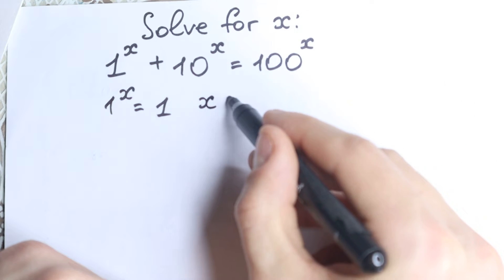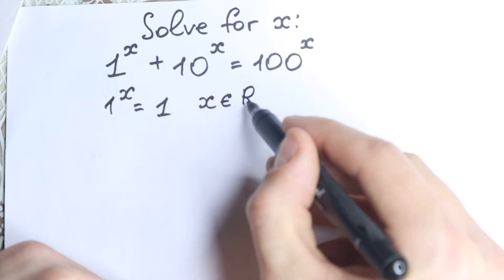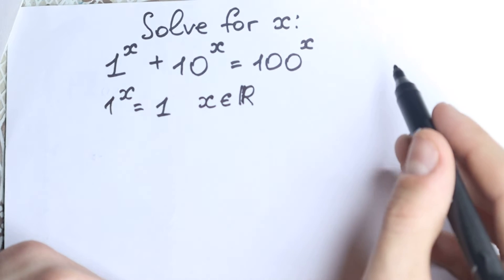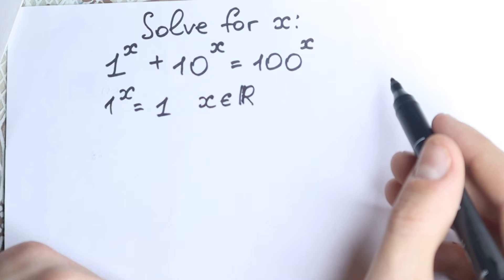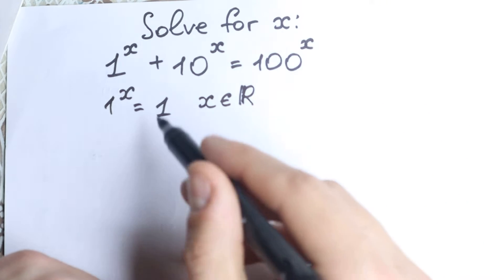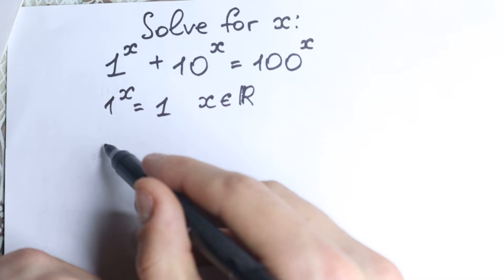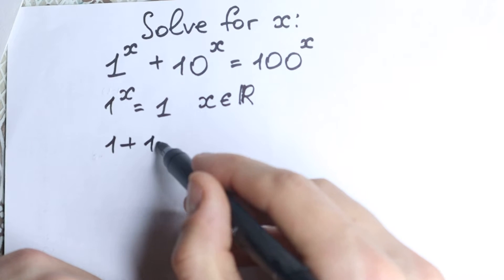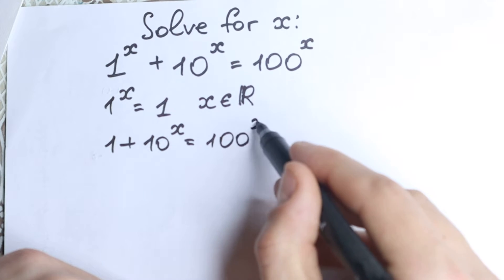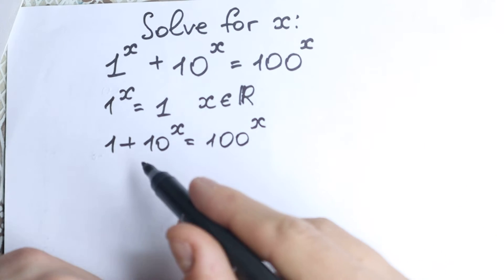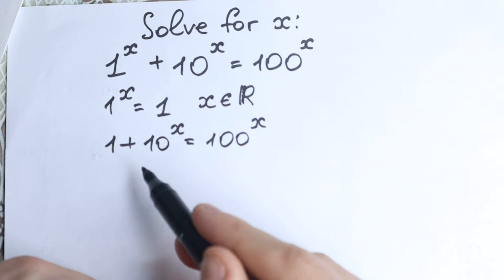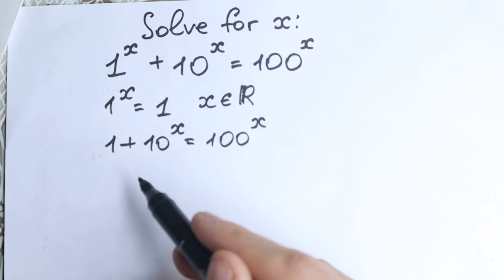So 1 to the x equals 1, and of course we can write that x is a real number — just to protect ourselves from mistakes. So if 1 to the x equals 1, x is a real number. Now let's rewrite our expression: 1 plus 10 to the x equals 100 to the power x. From this expression we've replaced 1 to the x with 1, which is great, because now we don't have that exponent — we have the interesting constant 1.